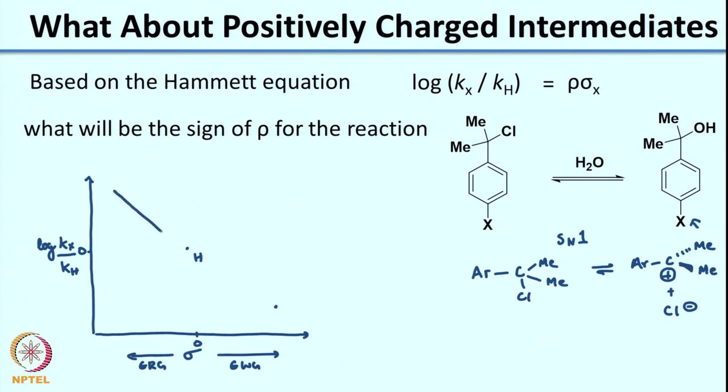Plotting this gives a rho value less than 0 — a negative slope. So when you have a positively charged intermediate like this carbocation, you end up with a negative rho value. We will look at the magnitude later.